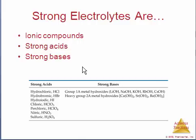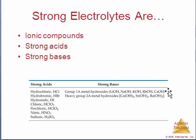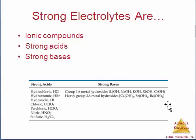The strong bases can be considered ionic compounds because they are ionic compounds. There are also seven strong bases: the Group 1, or alkali metal, hydroxides — lithium hydroxide, sodium hydroxide, potassium hydroxide, rubidium hydroxide, cesium hydroxide — and the heavier Group 2 metal hydroxides: calcium hydroxide, strontium hydroxide, and barium hydroxide. These are the strong bases.